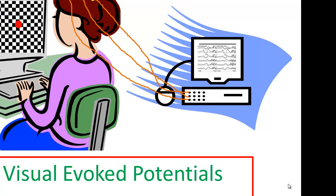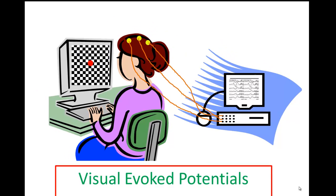Visual evoked potentials are conducted to test the integrity of the visual pathways from the retina all the way to the occipital cortex. These are recorded by having a patient sit in front of a computer and focusing on an identified area — this red circle in this instance. The patient looks at a checkerboard pattern that changes the intensity of colors: black boxes become white boxes and white boxes become black boxes at approximately 2.1 Hz per second. These changes stimulate the retina and the stimulus is conducted to the occipital cortex, checking the integrity of the visual pathways.